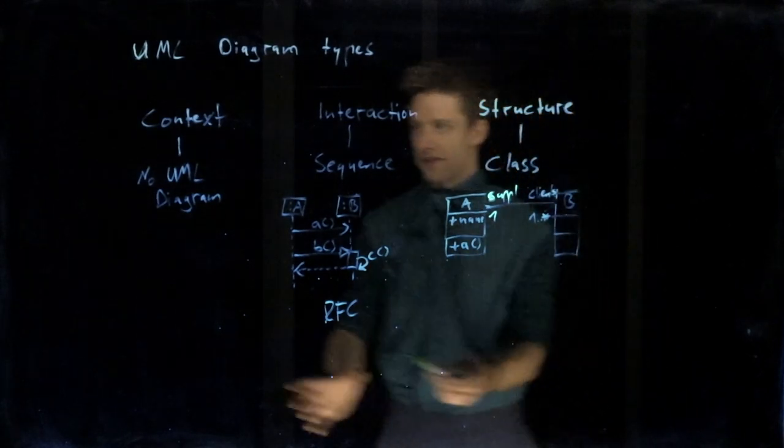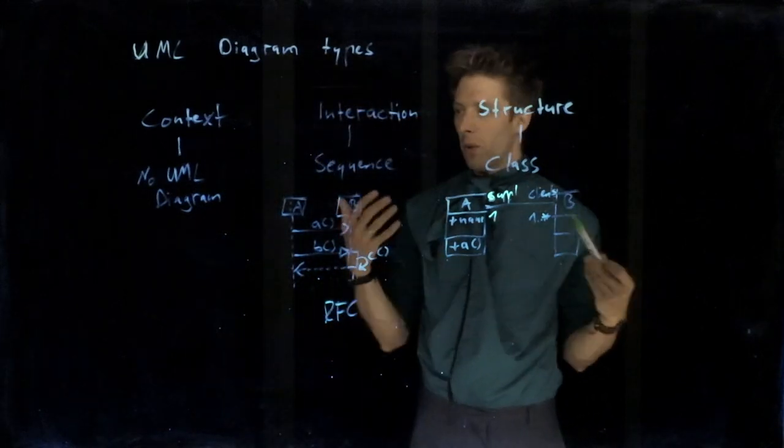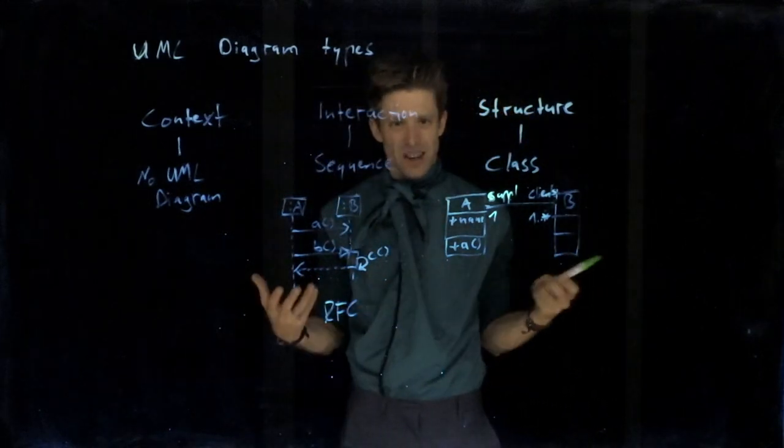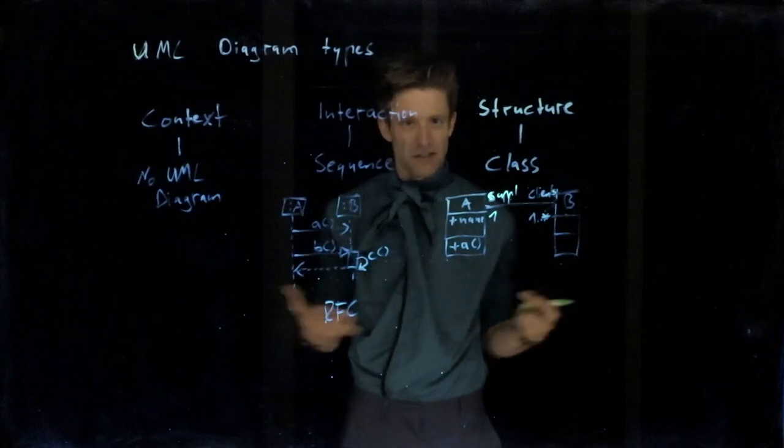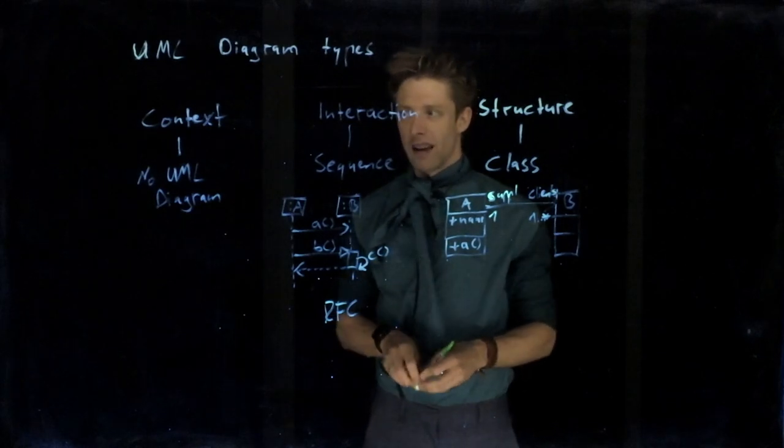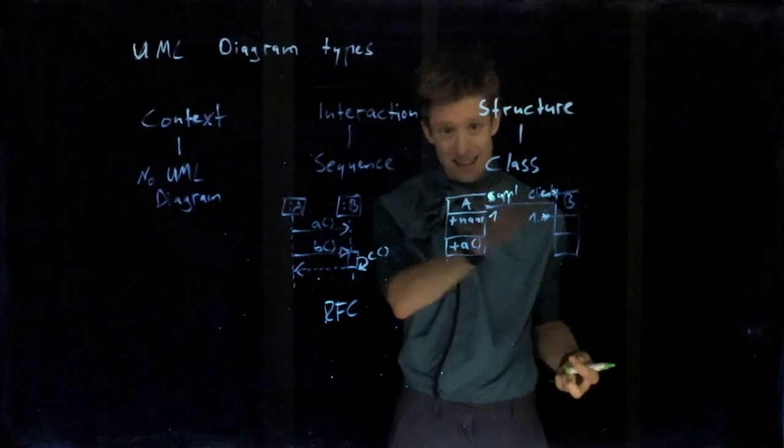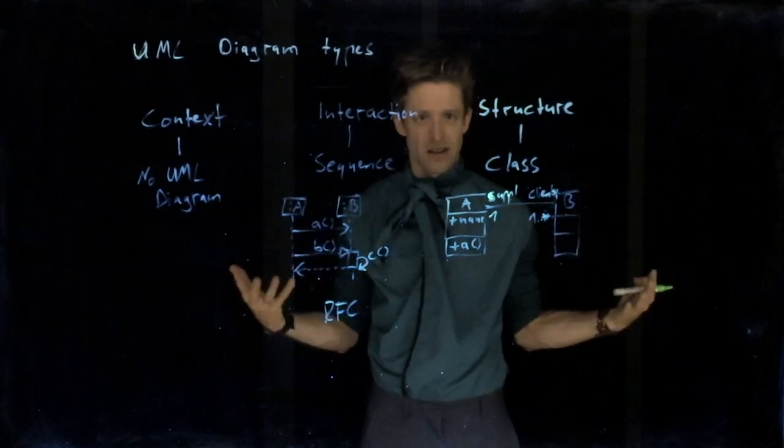These things are very often used for context also. For example, they are used to describe what kind of domains are there, what kind of elements do we have in our context. Imagine you're describing a library system, the classical example. You could have a domain model, a class diagram that describes what is there in a library.